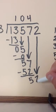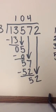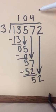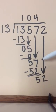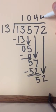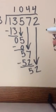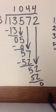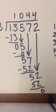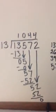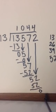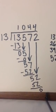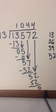Bring down our 2. And we know from our last digit here that 13 will go into 52 evenly, 4 times. So 13 times 4 is 52. And in this case, we're not going to have a remainder. We'll get a nice round number. So 13,572 divided by 13 is 1,044.